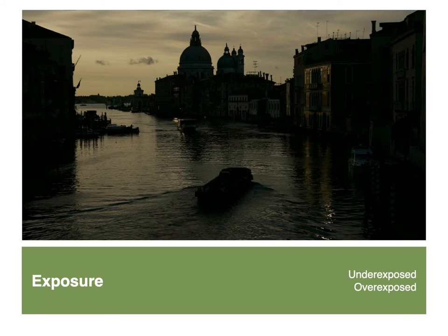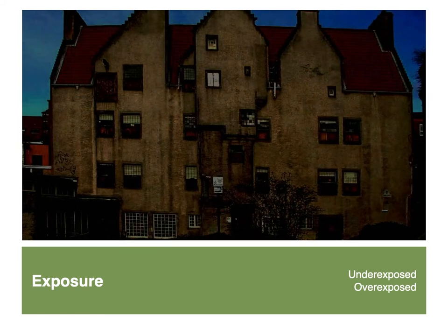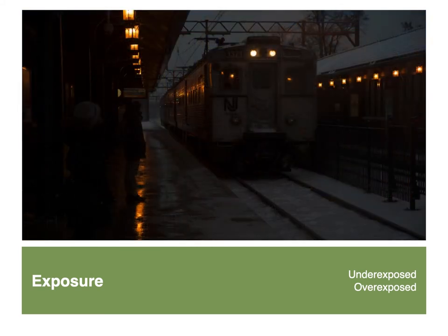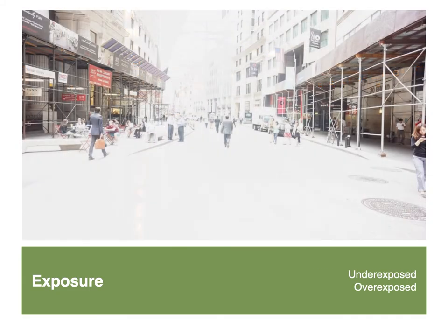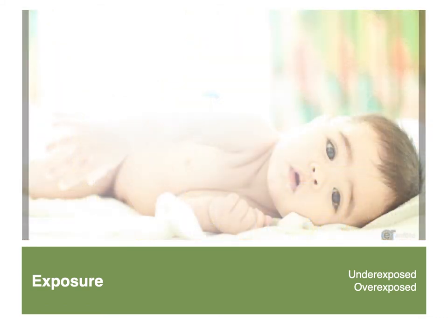One of the most basic choices a photographer can make is exposure—how bright or how dark the scene will be rendered. Images can be deliberately underexposed or deliberately overexposed, or true to scene representing a more accurate portrayal of the light values present when the image was made. When discussing an image, consider the exposure the maker has chosen.